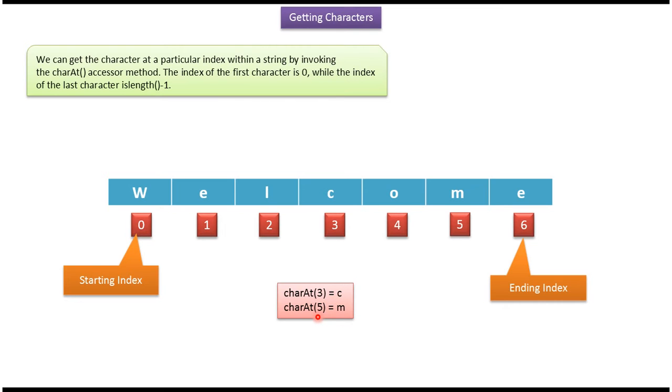At index position 5, 'm' is there, so the charAt method returns 'm'.